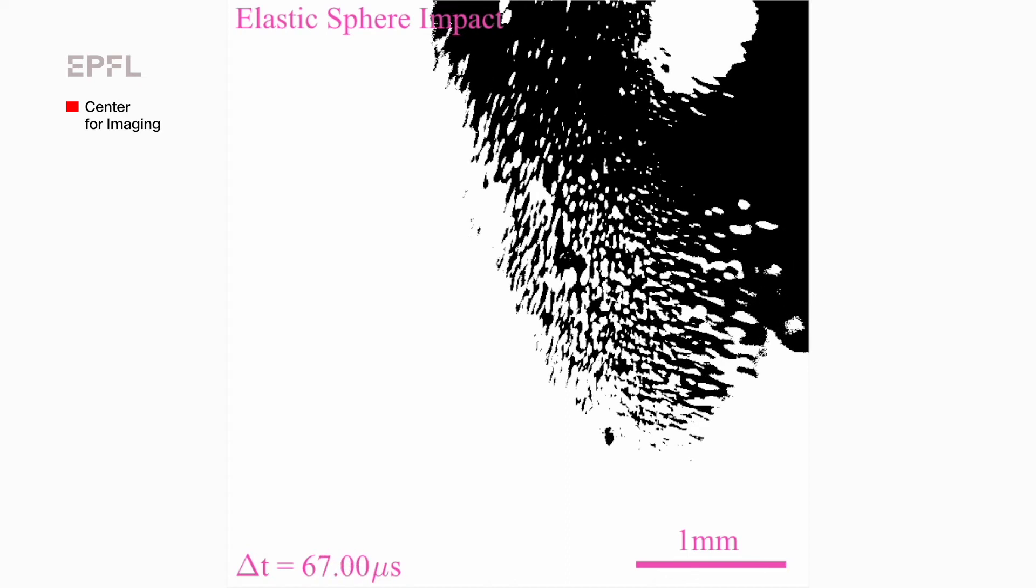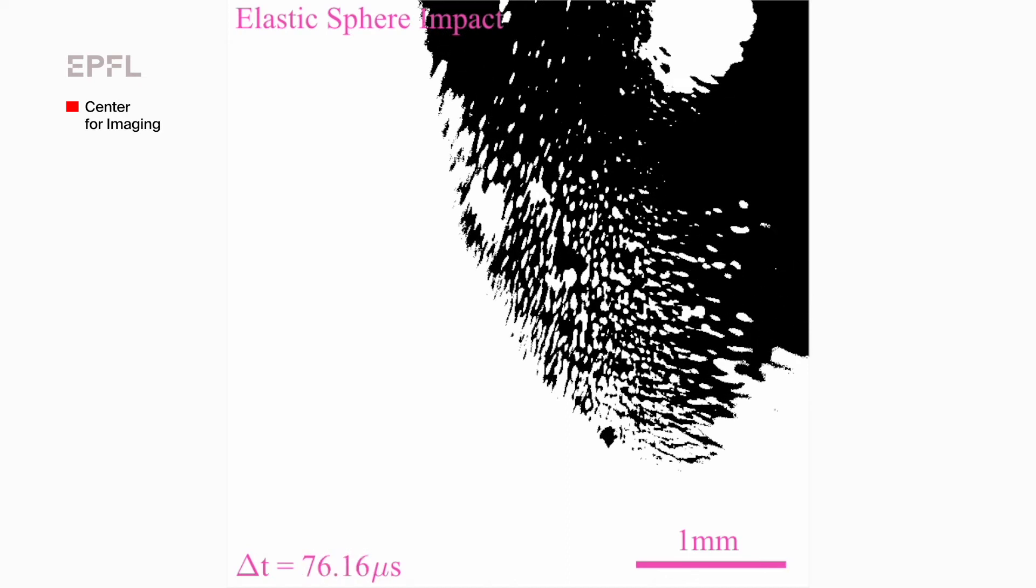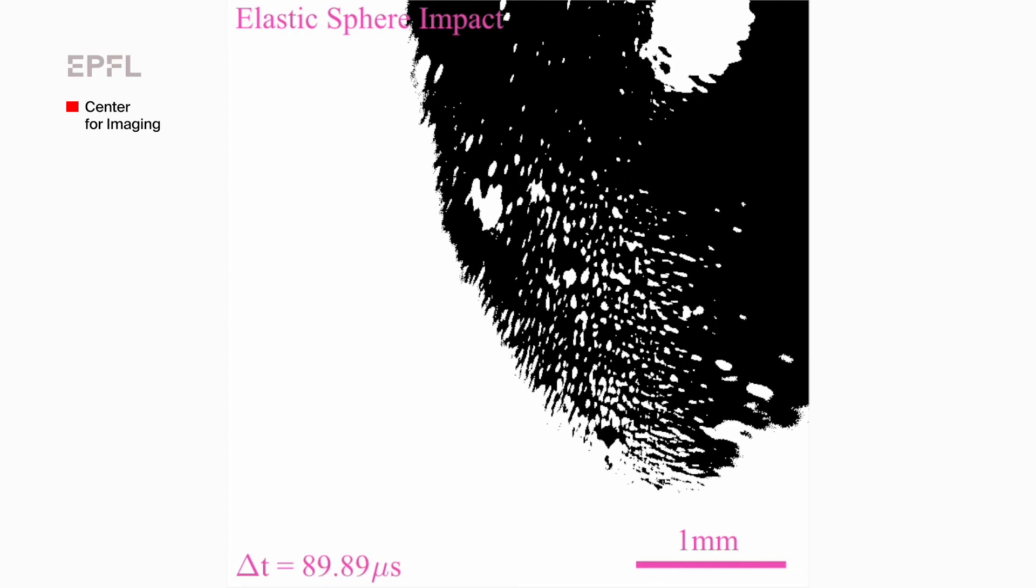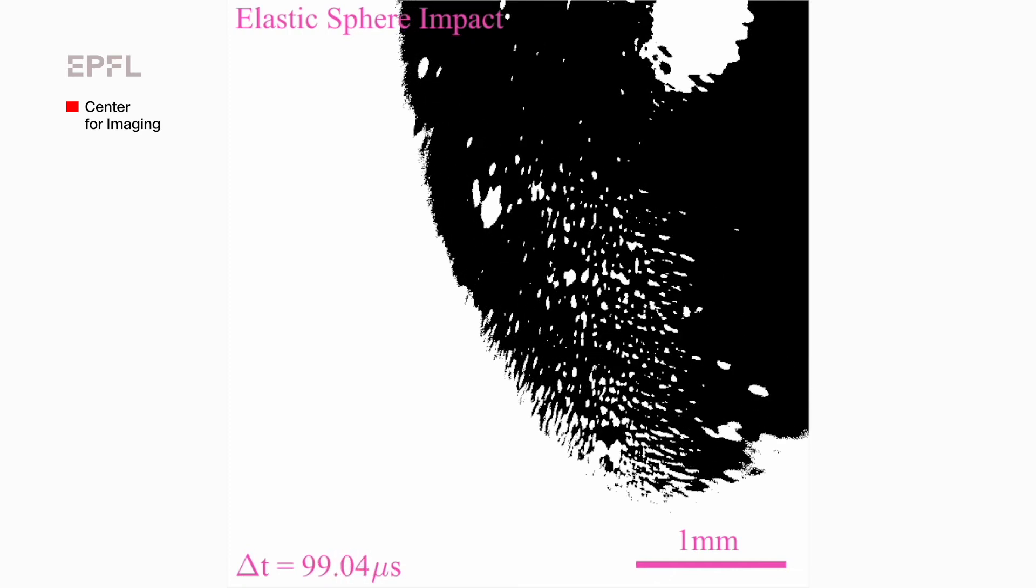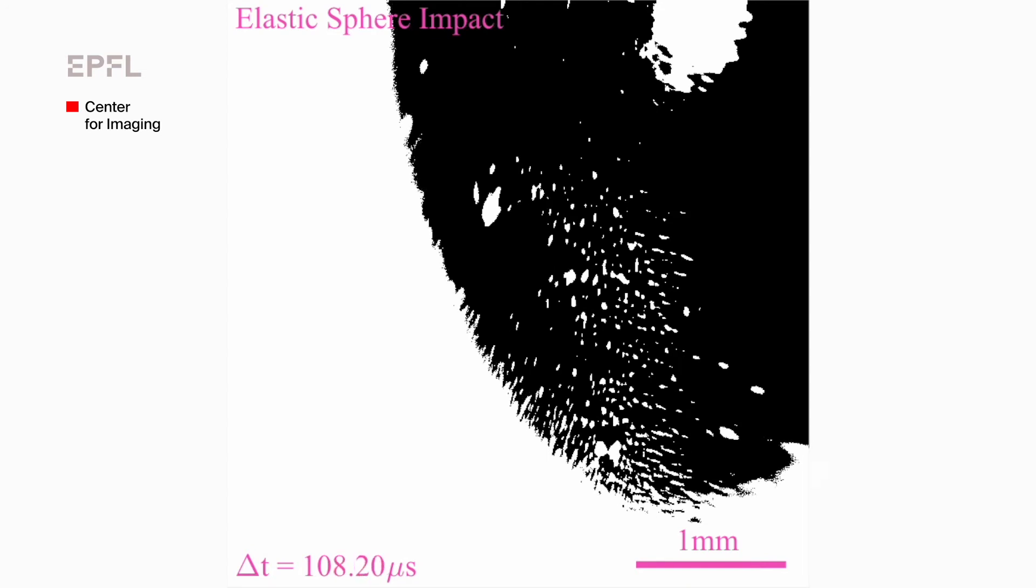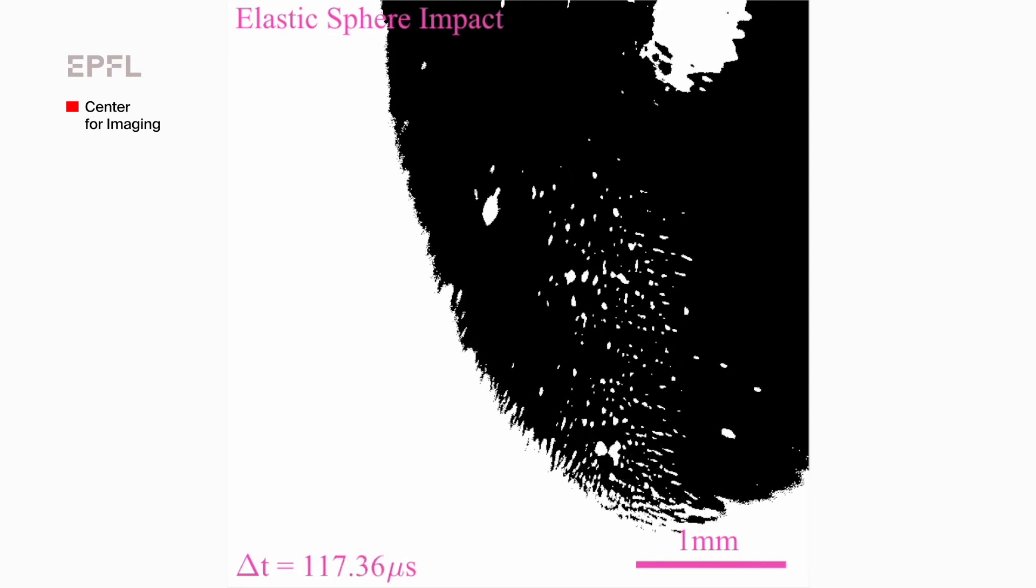We can basically obtain a grayscale image where the grayscale essentially indicates the location of contact regions between the elastomer and the glass at the time that it actually made that contact.